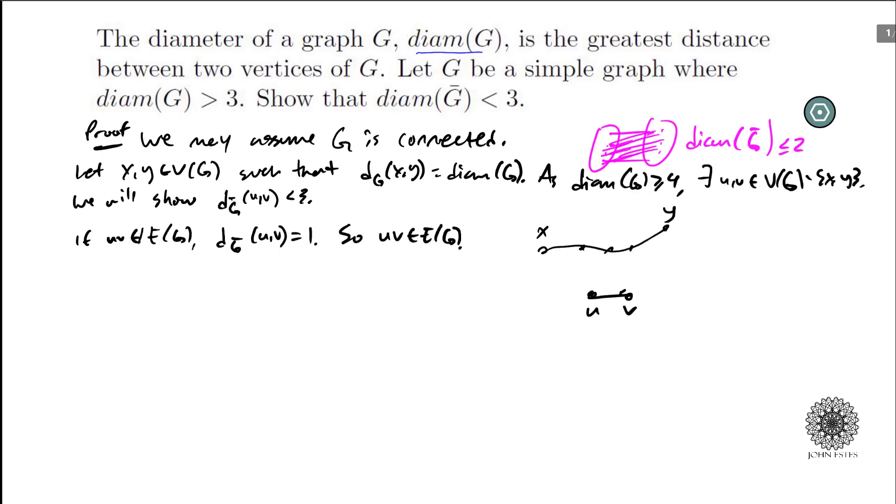Alright so what else do we know? Well let's figure out how they connect to X and Y. So we see here that U cannot be in the intersection of the neighborhoods of X and Y. Now why is that? Because if it is, then the distance between X and Y is 2. And we know it's greater than 4. Greater than 3.